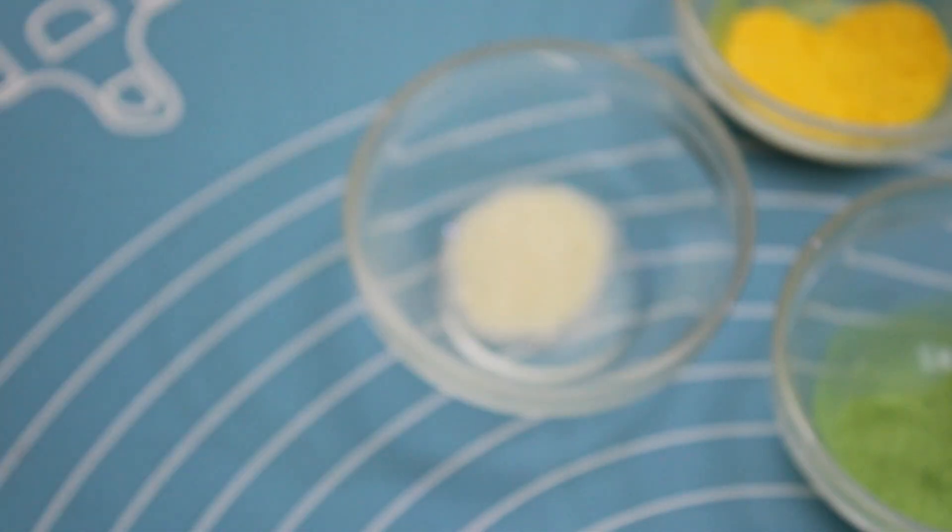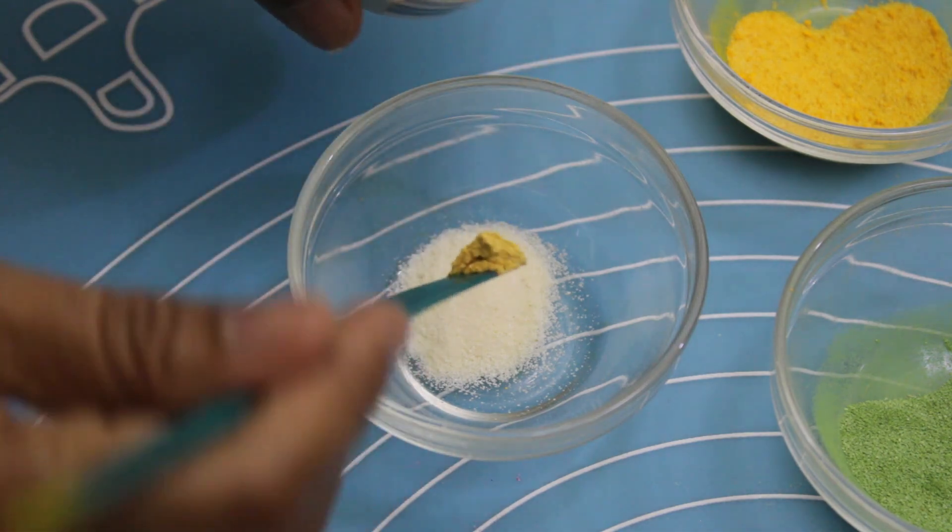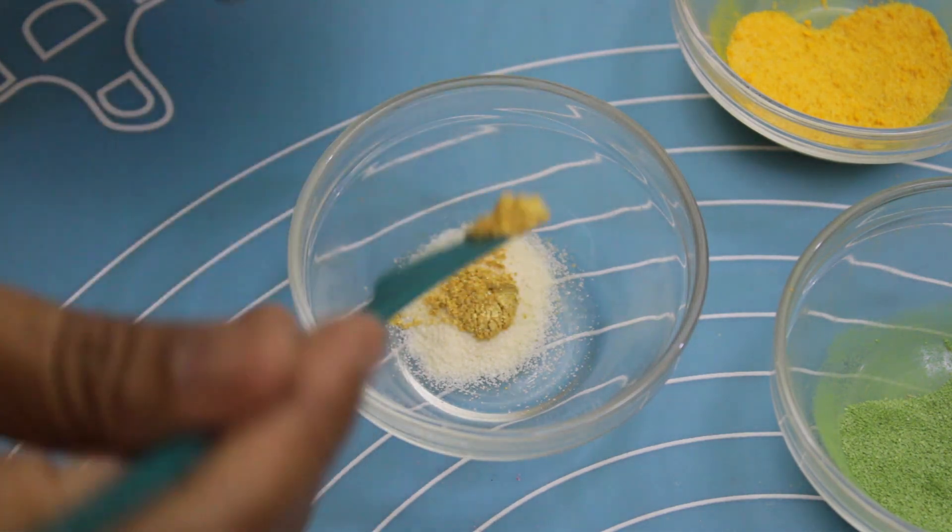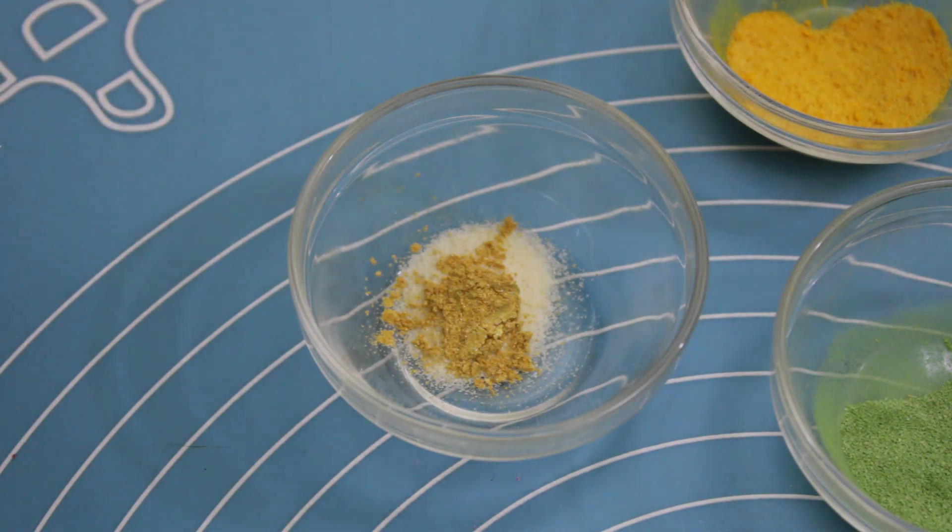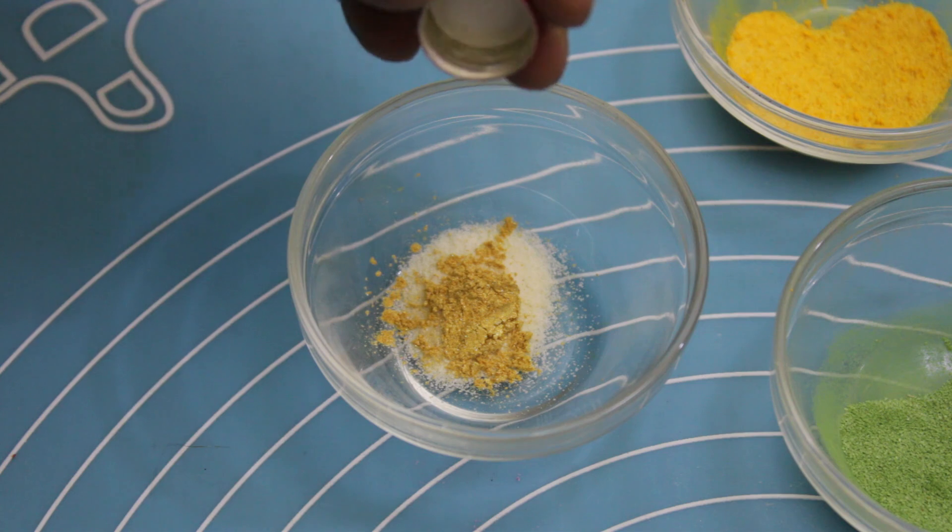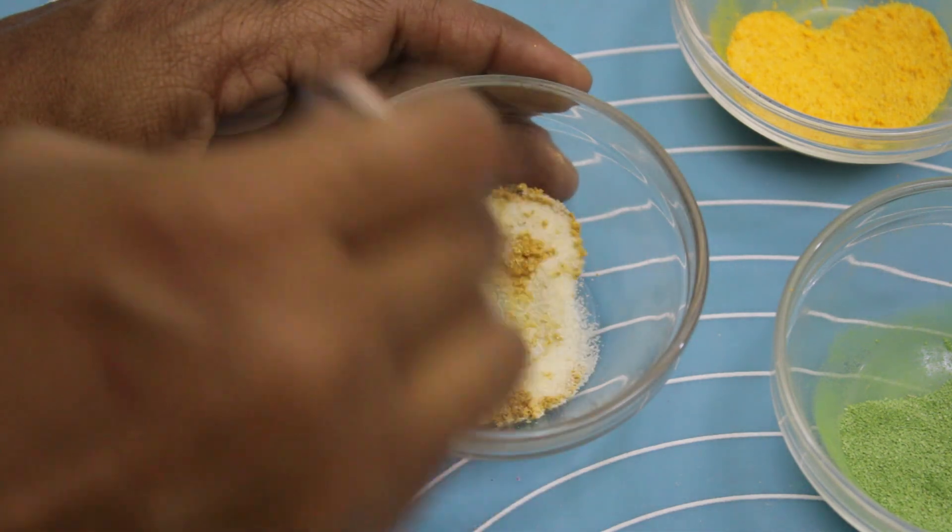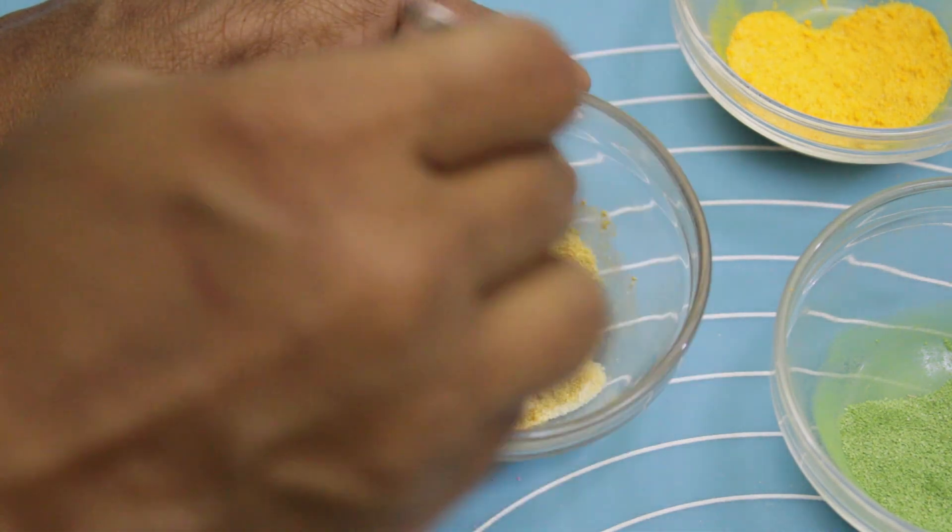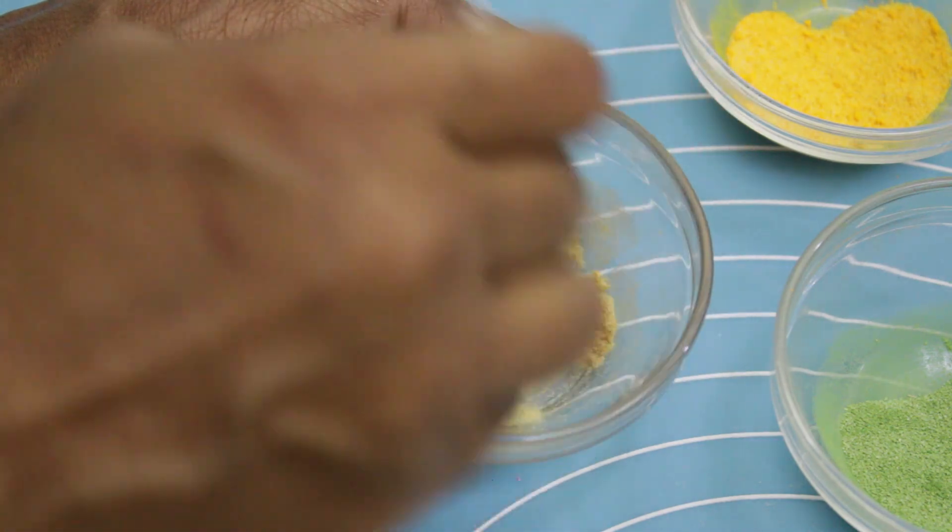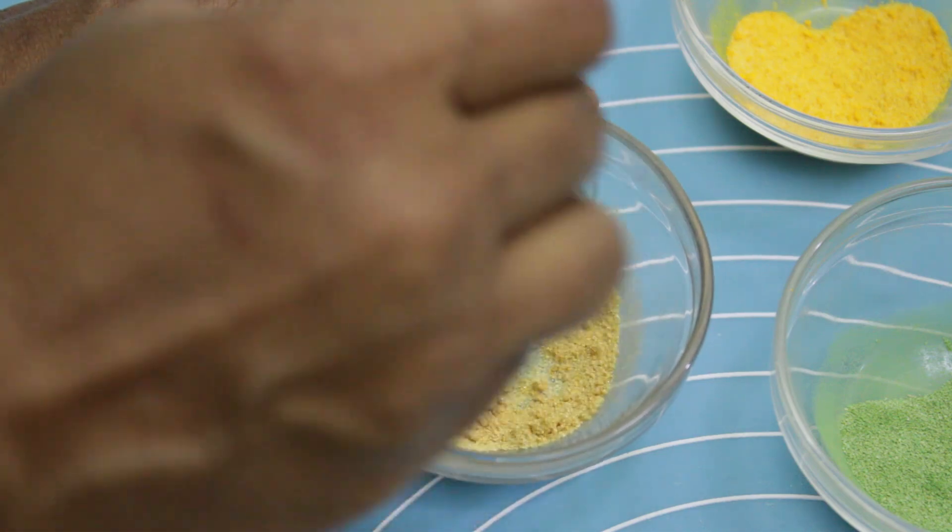Now I'm going to make the gold one. Of course I'm using gold luster dust, and then I have to use a little bit of lemon essence or almond essence. Today I'm using almond essence. Mix it. Don't worry about these lumps. When it's dry, it will be smooth and the lumps will be gone.